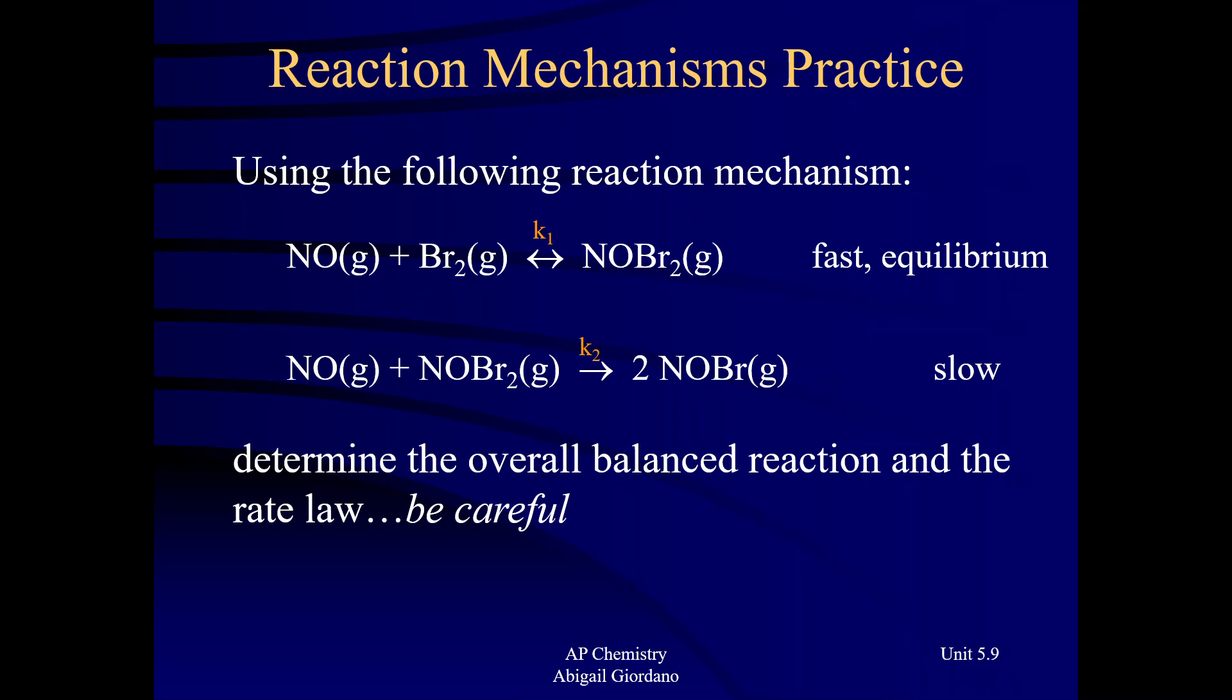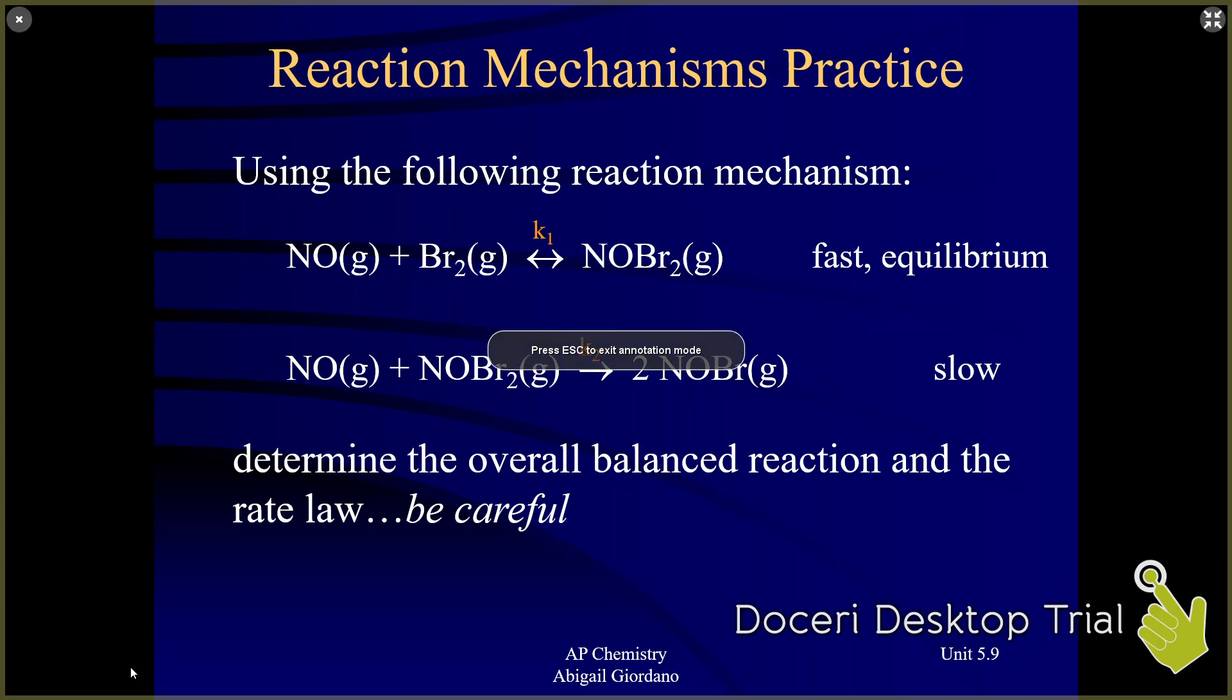Not only do I see that the slow step is not first, but that first step that says that it is fast, very often you'll see the word equilibrium there. And I can also see that in that first elementary step, there is a double-headed arrow right there. That also indicates that this reaction is at equilibrium. I realize we haven't gotten to that unit yet, but equilibrium just means that the reaction is going in the forward and reverse direction. That's really not going to affect how we handle this problem.